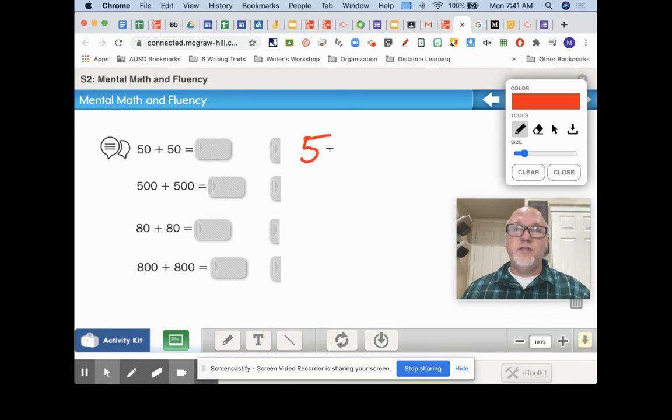Remember, a digit is 0, 1, 2, 3, 4, 5, 6, 7, 8, 9. Ten is not a digit. Ten is made up of a 1 and a 0.